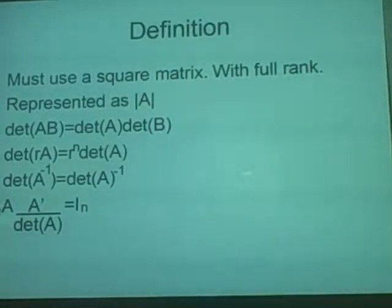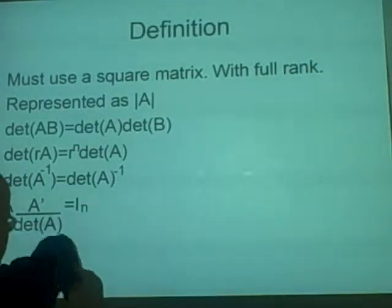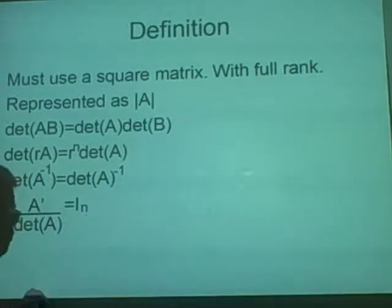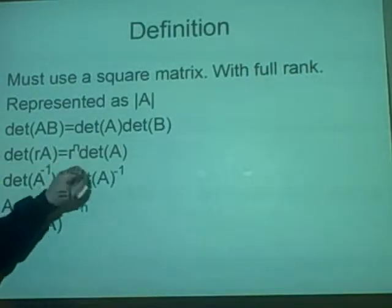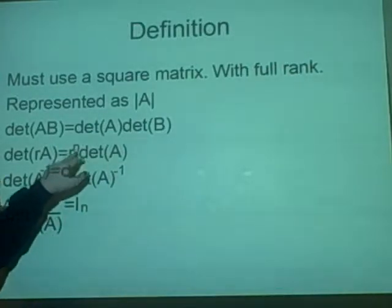We have this here which tells us A prime is known as adjoint, and if you divide that by determinant A, you'll get the identity matrix of N where N is the size of the square. This is where this comes from, the size of the matrix.